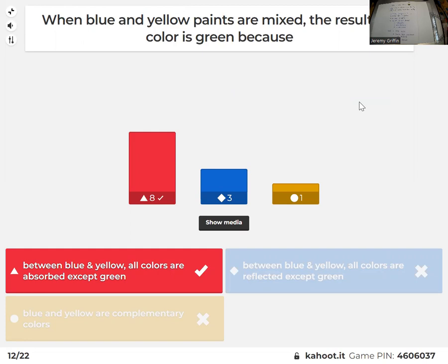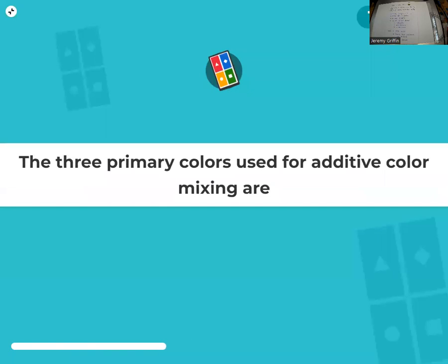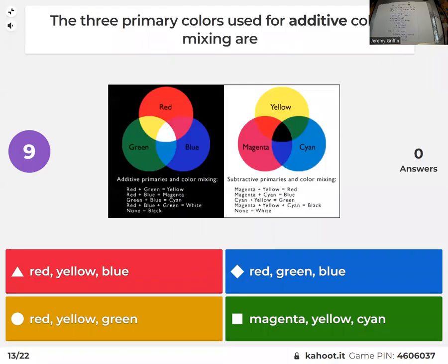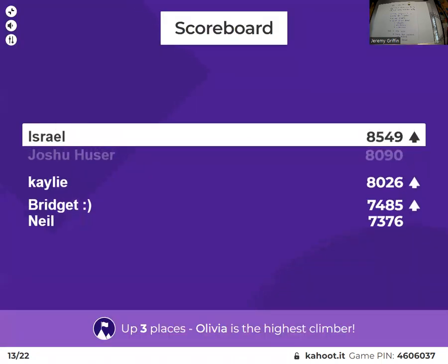Did you guys happen to notice that the intersections of the, it's sort of like a Venn diagram type, right? You guys notice that the intersections between any two of those are the primary colors of the other color mixing type? Okay, I guess that's right. Three primary colors for additive color mixing. Additive. Red, green, blue.